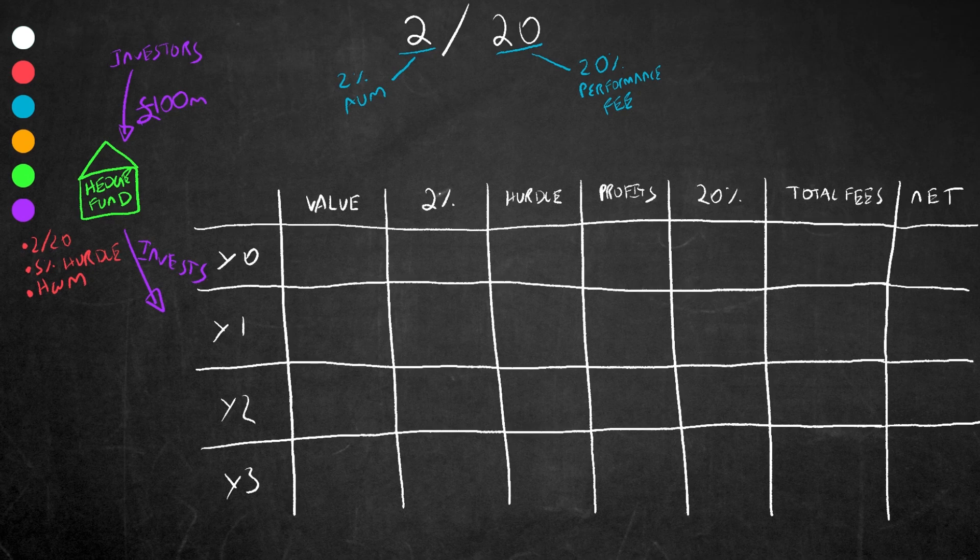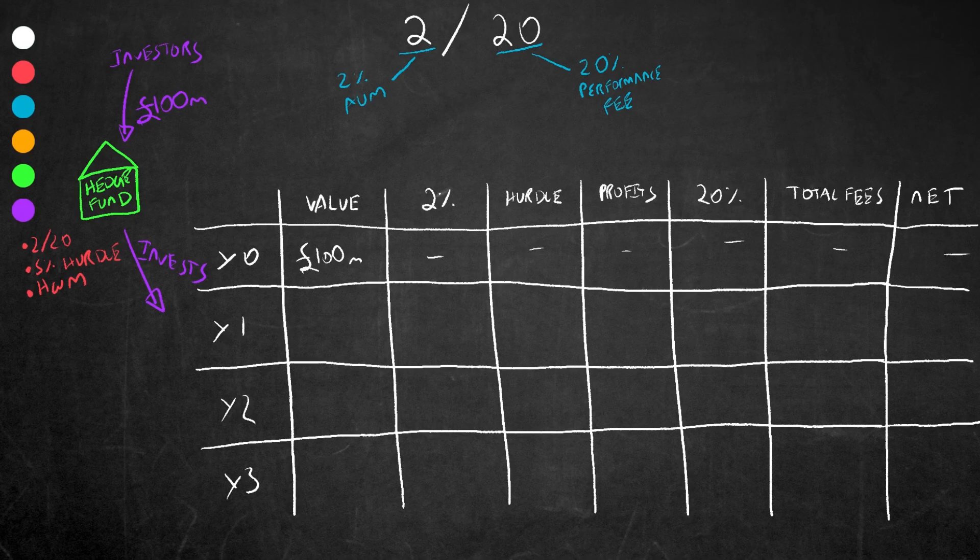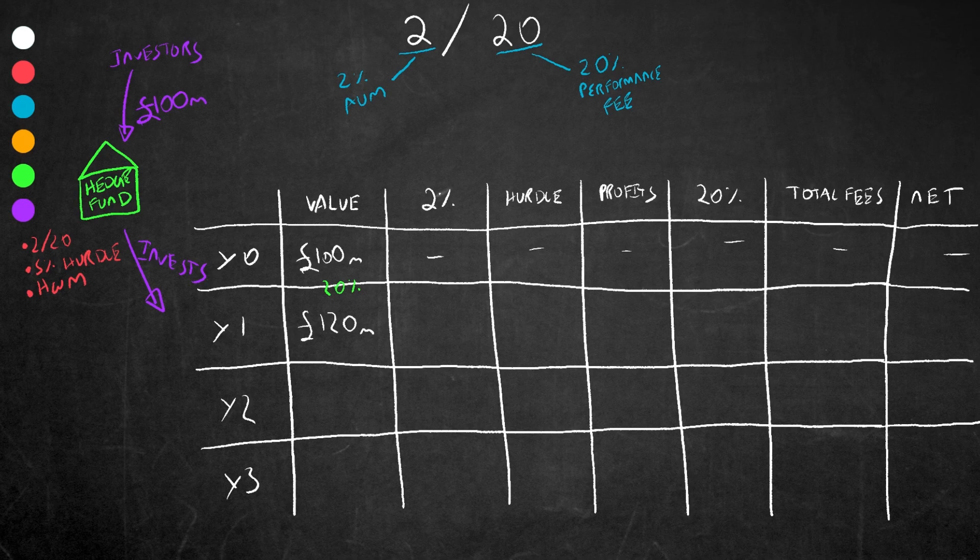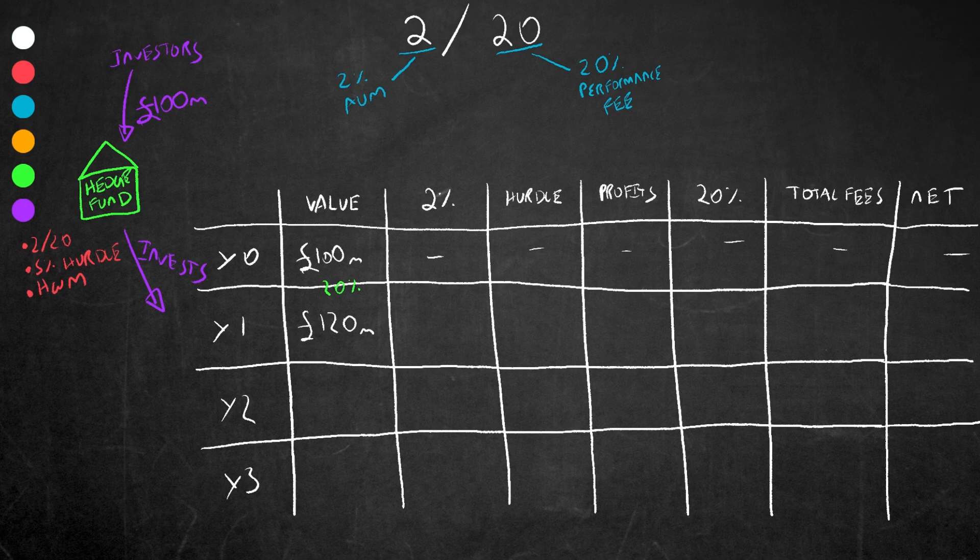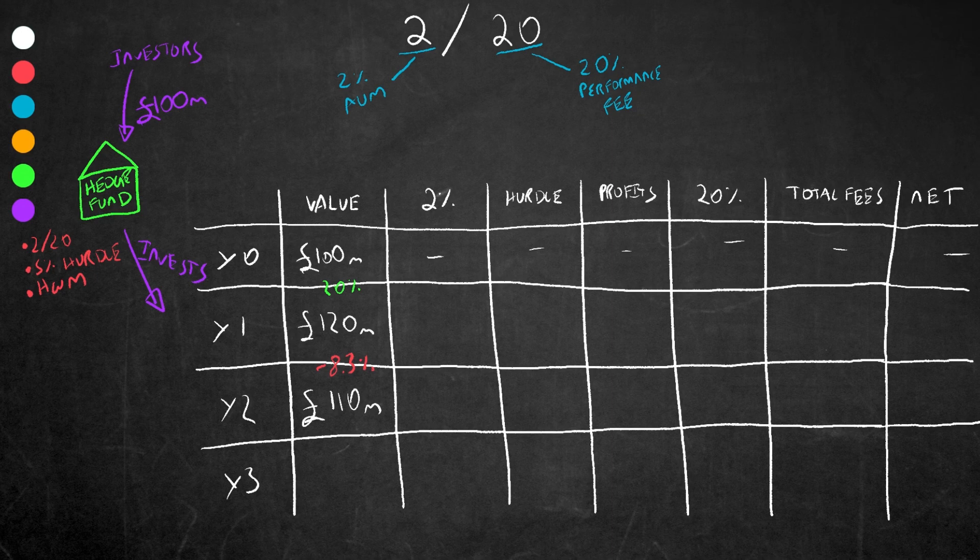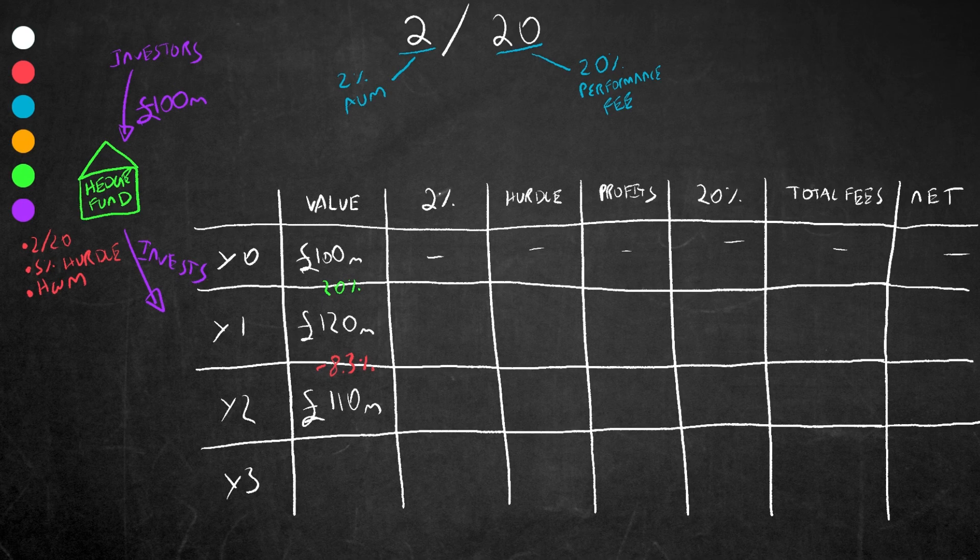In year zero, which is now, 100 million is the value of the fund. At the end of year one, the fund does well and achieves a 20 percent return, so the original 100 million is now worth 120 million. In year two, the fund doesn't do so well and drops to 110 million. In year three, the fund turns itself around and makes another 20 percent return, leaving the value at 132 million.